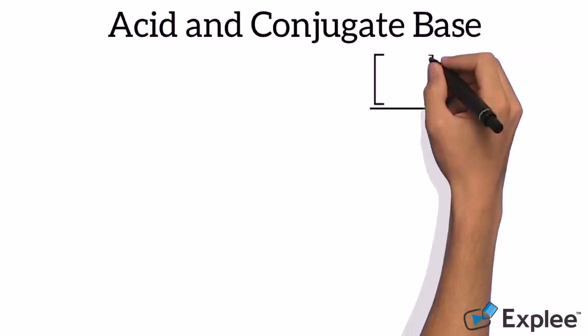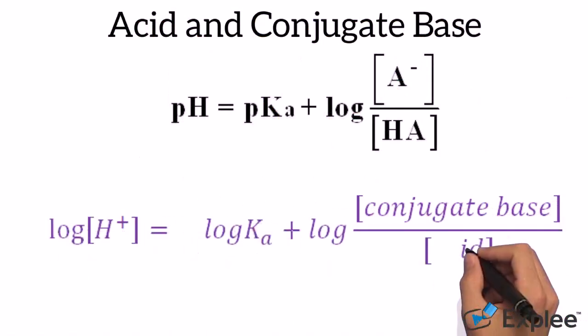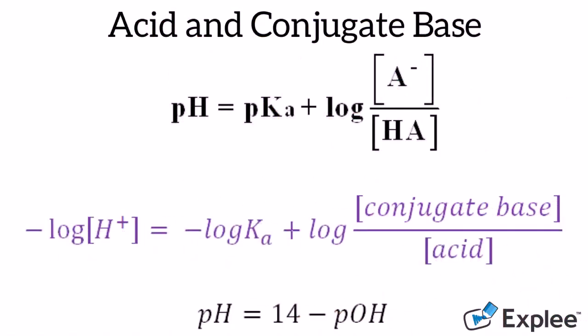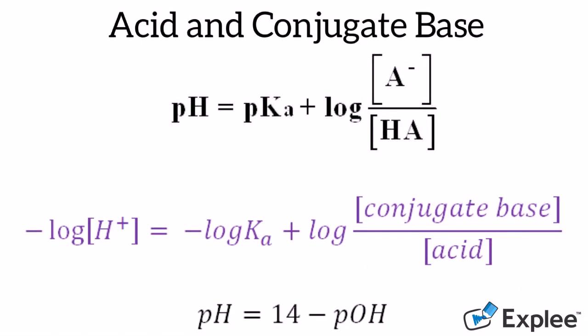For acidic buffers, pH is the negative logarithm of the concentration of H plus, or the difference of 14 and the pOH if the pOH is given. pKa is the negative log of the acid dissociation constant. A minus is the concentration of the conjugate base or the salt. HA is the concentration of the acid.